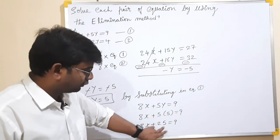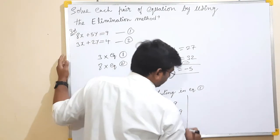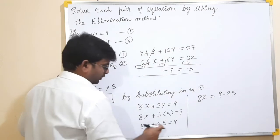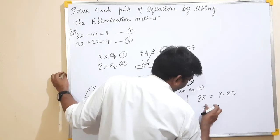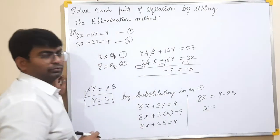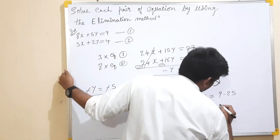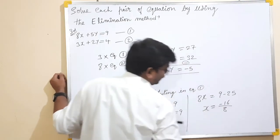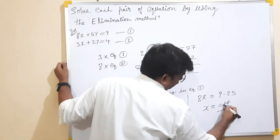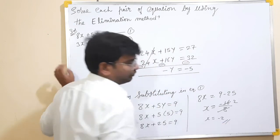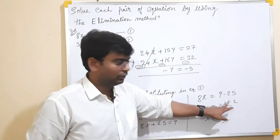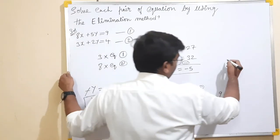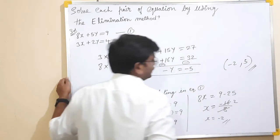So, 8x equals 9 minus 25, which equals minus 16. Dividing both sides by 8: x equals minus 2. So x equals minus 2 and y equals 5. This is our final answer.